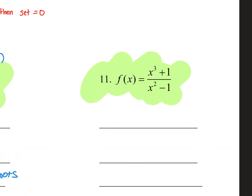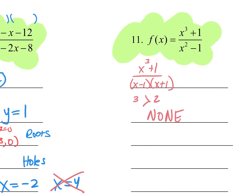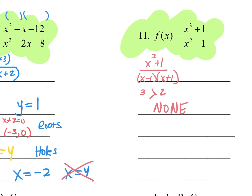The last one: can you factor the numerator x cubed plus 1? No. Can you factor the denominator x squared minus 1? Yes — x minus 1 times x plus 1. Compare the degrees: numerator is 3, denominator is 2. Three is greater than 2, so no horizontal asymptote. Set denominator equal to zero for vertical asymptotes: x equals 1 and x equals negative 1. For zeros: x cubed plus 1 equals zero, so x cubed equals negative 1 — x equals negative 1.